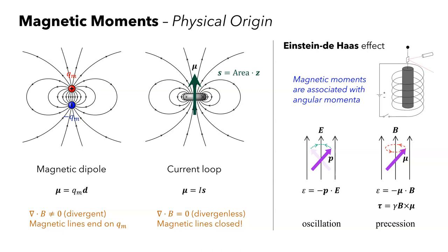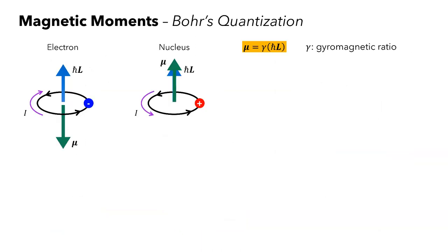The precessional frequency is determined by a factor known as the gyromagnetic ratio. By definition, the gyromagnetic ratio is the conversion factor between angular momentum and magnetic moment. Because electrons are negatively charged, their circulating motion or current loop generates a circulating current in the opposite direction. Therefore, the magnetic moment is opposite to its angular momentum. In contrast, for the nucleus, which are positively charged, the magnetic moments and the angular momentum are in the same direction.